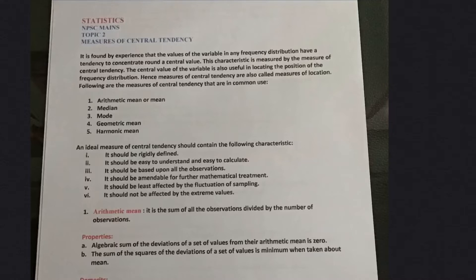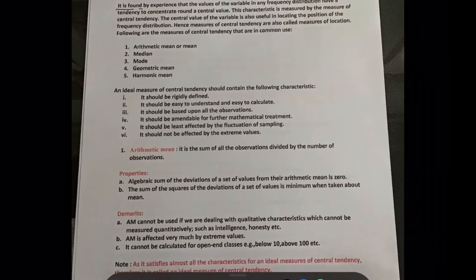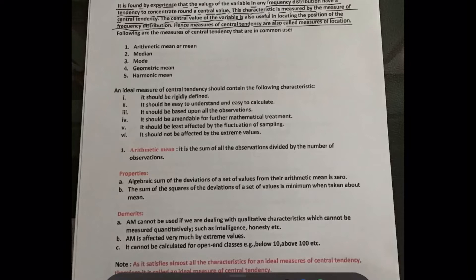We'll begin with the topic: Measures of Central Tendency. It is found by experience that the values of a variable in any frequency distribution have a tendency to concentrate around a central value. This characteristic is measured by the measure of central tendency. The central value is also useful in locating the position of the frequency distribution — hence measures of central tendency are also called measures of location.